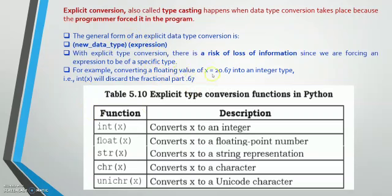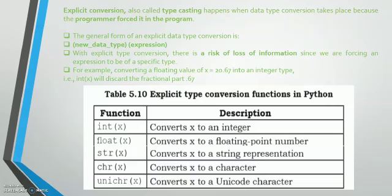For example, a floating value x = 20.67 — float values have a decimal point. If we convert 20.67 to integer type, the integer does not have decimal values, so .67 is left out — that is loss of information. In explicit conversion, the conversion takes place when the programmer forces it and there can be loss of information. The functions for explicit type conversion are: int(x) converts x to integer, float(x), str(x), chr(x) for character, and unicode character.